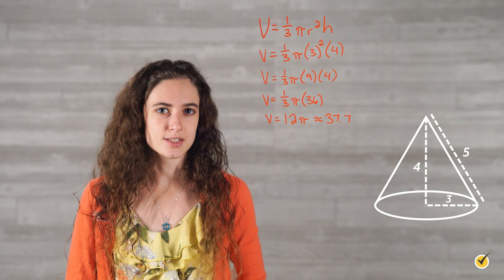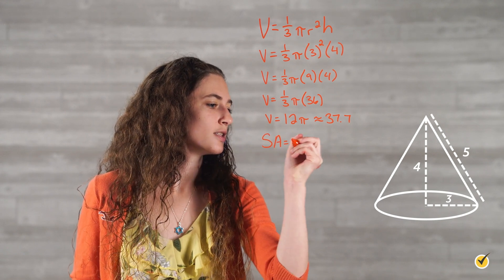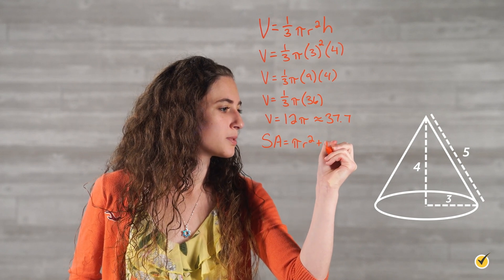Now let's find the surface area of this little guy. Surface area is equal to pi r squared plus pi r l.